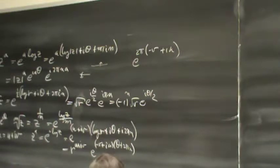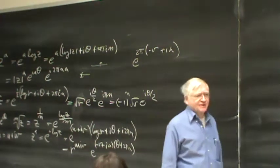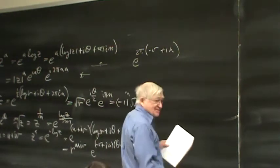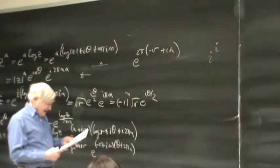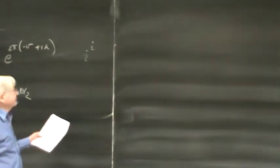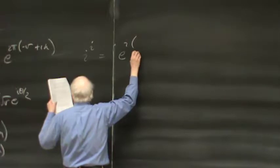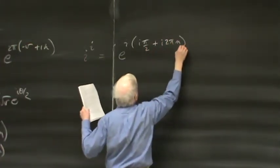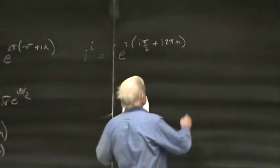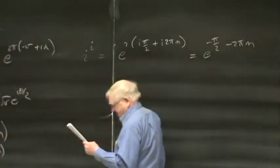In fact, someone I know told me that at Microsoft or maybe Google, one of the interview questions was: what's the most general form of i to the i? Well, this would be e to the i times log i. The log of i is iπ/2 plus the ambiguity 2πin. So that gets you e to the minus π/2 minus 2πn. Quite unexpected.